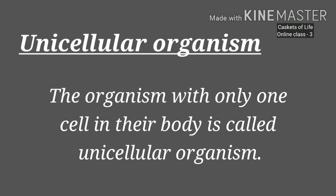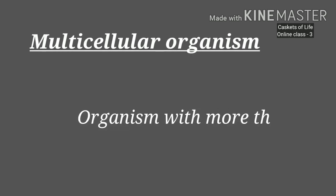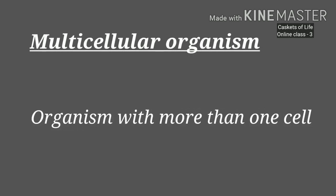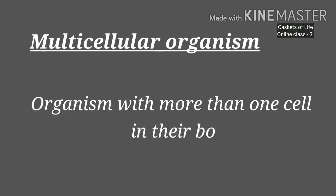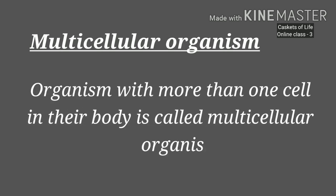The organism having only one cell is called a unicellular organism. Then multicellular organism — a multicellular organism is an organism with more than one cell in its body, which is called a multicellular organism.